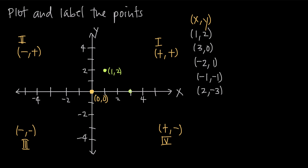What about negative 2, positive 1? Remember, this is (x, y), so x is negative 2 and y is 1. We start at the origin and go in the negative direction of the x-axis 2 units, to negative 2. Then we go up positive 1 in the positive direction of the y-axis — from that point, up 1 unit. This is the point (-2, 1), and as you can see, that matches the signs for the second quadrant — negative x and positive y.